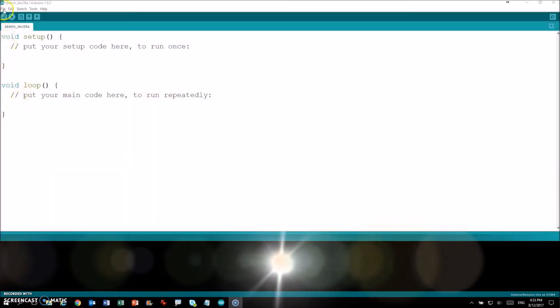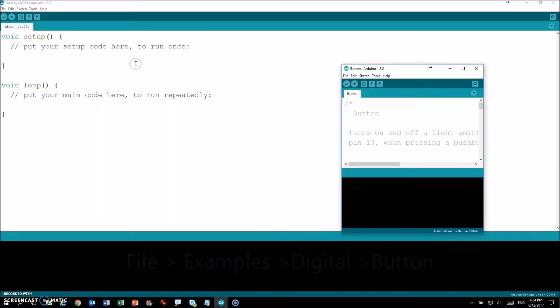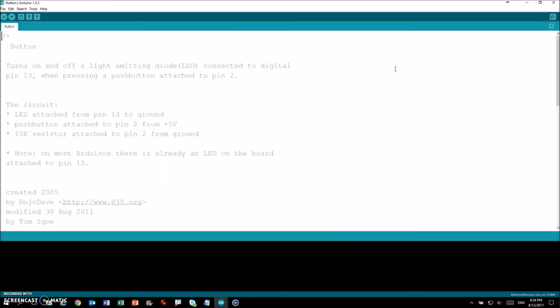From the Arduino software, select File, Examples, Digital. Select and open the button code. Upload the code onto the Speeduino board.